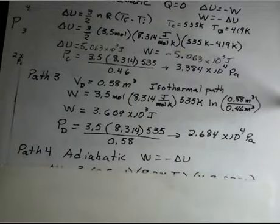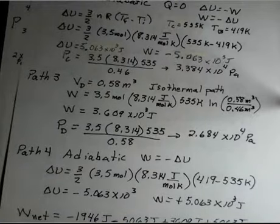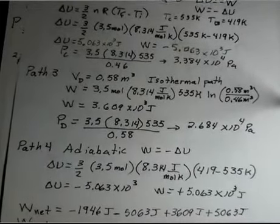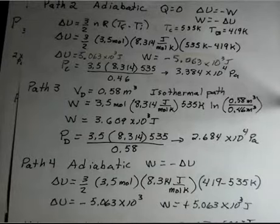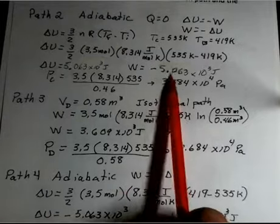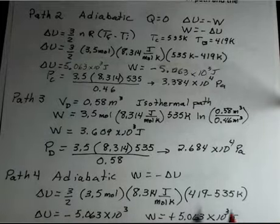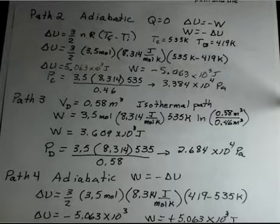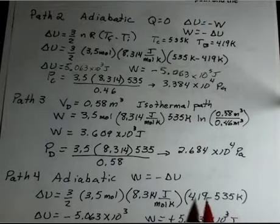The last segment is adiabatic. Again, the work is minus delta U. And we have the numbers we need to calculate the adiabatic work done, the change in the energy, the delta U. And then the negative of that becomes the work. So I have 5,063 joules. Have I seen that number before? Yes, it wasn't as far back as I thought, on Path 2. Why is it that one is negative 5.063 times 10 to the third and the other is positive 5.063 times 10 to the third? The formula for the adiabatic paths is just the difference in temperature. In Path 2, it was 535 minus 419. On Path 4, it's 419 minus 535. So we should expect the same magnitude numbers just with opposite signs.